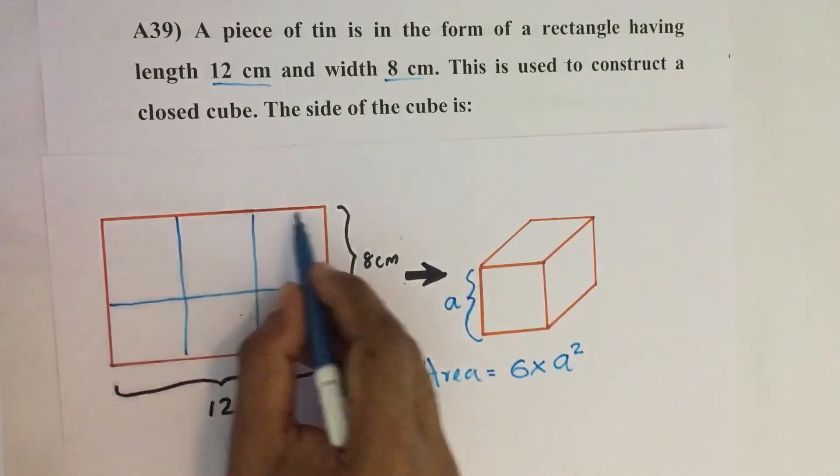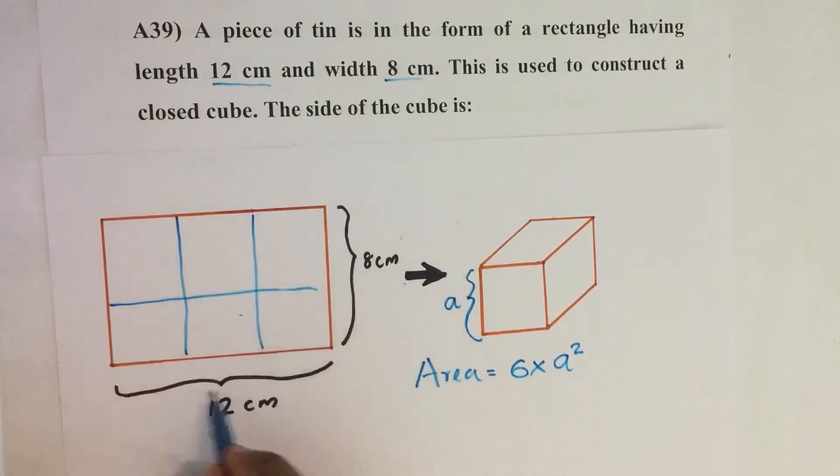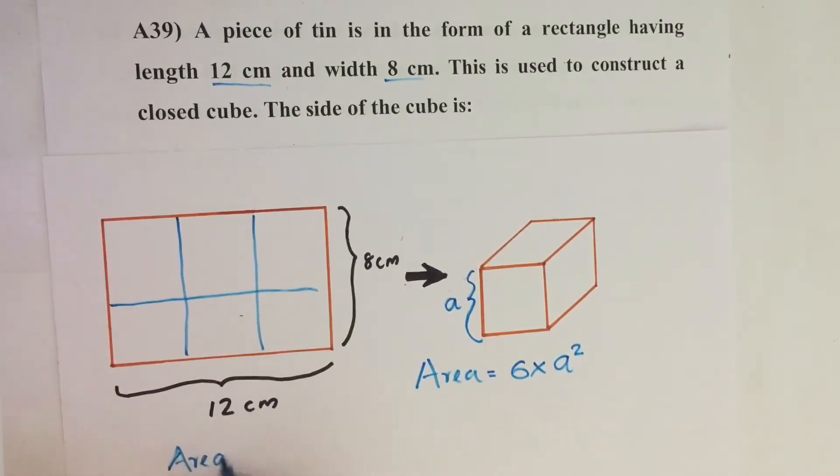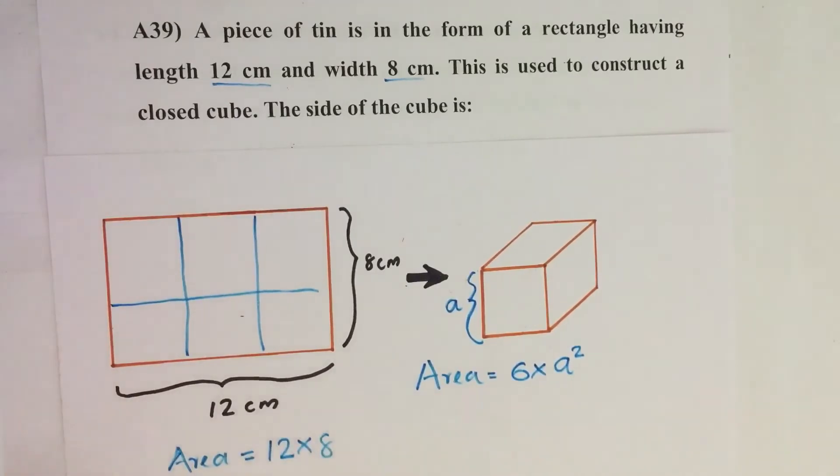Similarly, the outer surface area of this sheet equals length into breadth, that is 12 into 8. Then both these areas are equal.